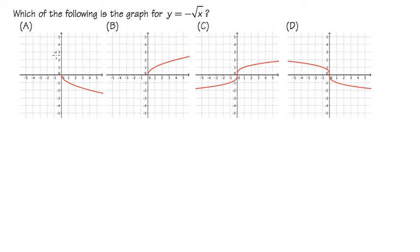In this equation, we are going to figure out which of the following is the graph of the equation y equals negative square root of x. The way that I'm going to show you is that we will make a table for the values, and I will try to make a graph from scratch first.